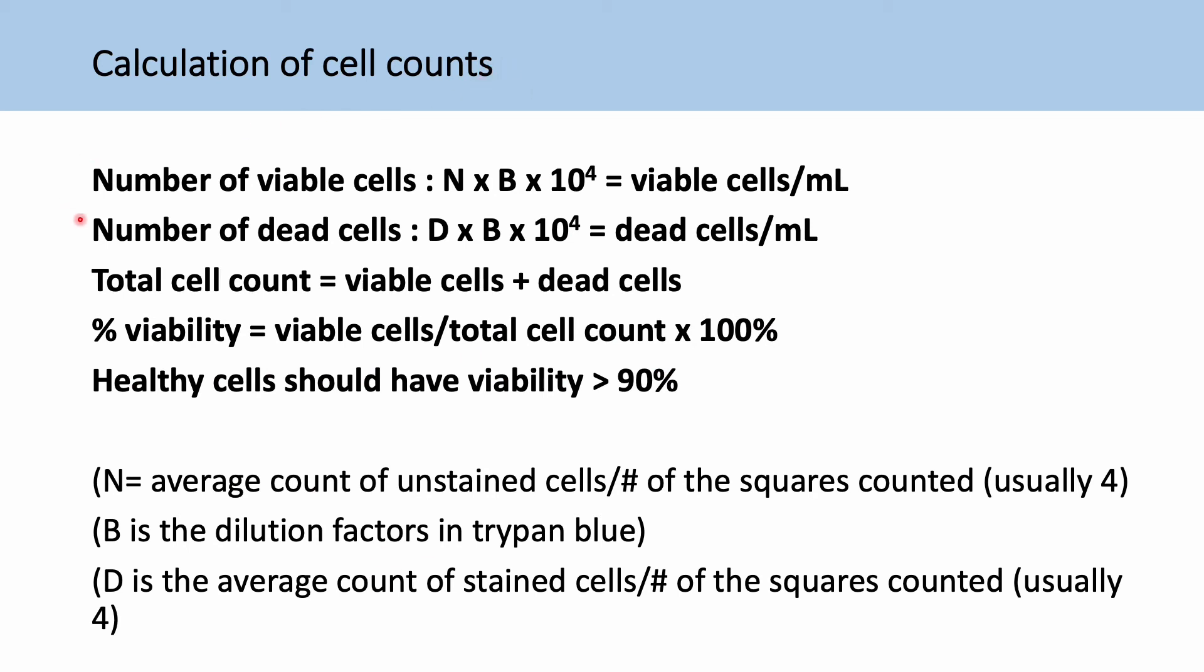So some important numbers are our number of viable cells. So that's the number of unstained cells multiplied by our dilution factor. So 2 or 5, whatever it is in your experiment. Then multiply by 10 to the power of 4 and that gives viable cells per mil.